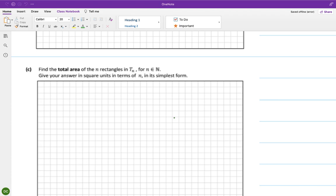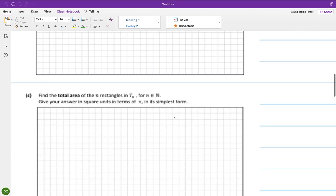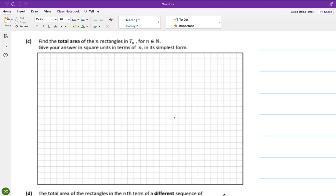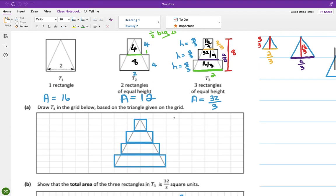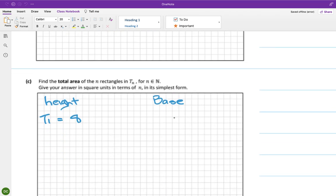Okay, so find the total area of the n rectangles in tn where n is an element of natural numbers and give your answer in square units in terms of n in its simplest form. Okay, there must be some kind of pattern. It's just length by width, so the height and the base.